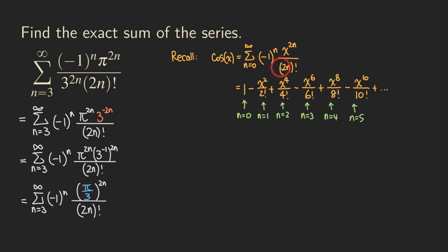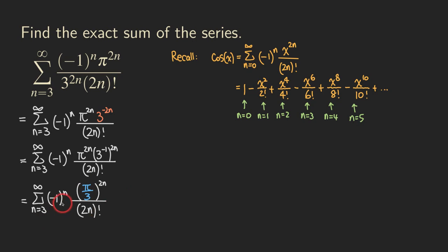Not that simple, though — because we do not really have the same series. The Maclaurin cosine series starts at n equals 0, but our series starts at n equals 3. So the question is how do we actually use that, because they do not have the same starting value for n. We need to do a little adjustment so that we can turn the starting value into 0.